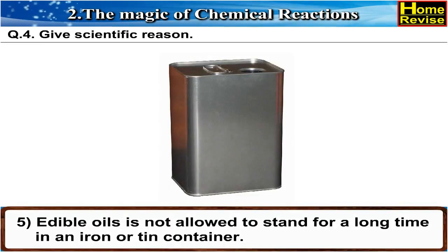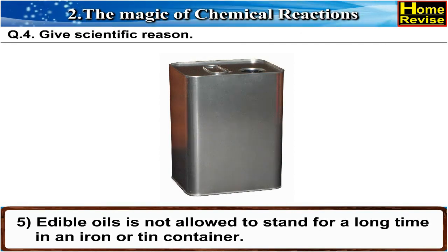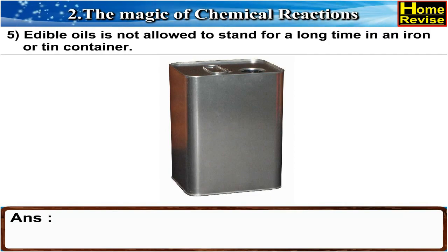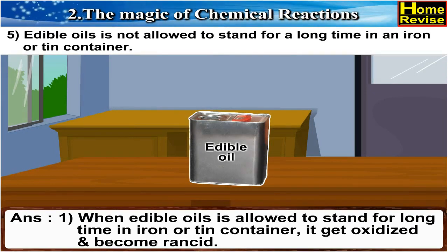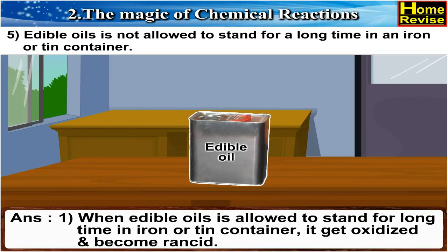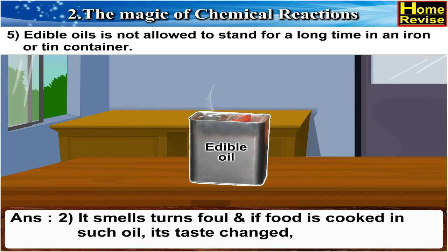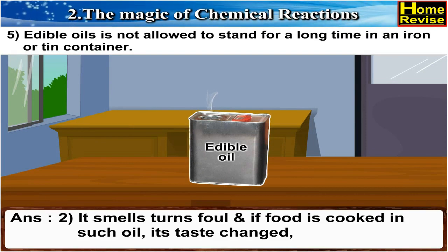5. Edible oil is not allowed to stand for a long time in an iron or tin container. Answer: When edible oil is allowed to stand for a long time in an iron or tin container, it gets oxidized and becomes rancid. Its smell turns foul, and if food is cooked in such an oil, its taste changes.